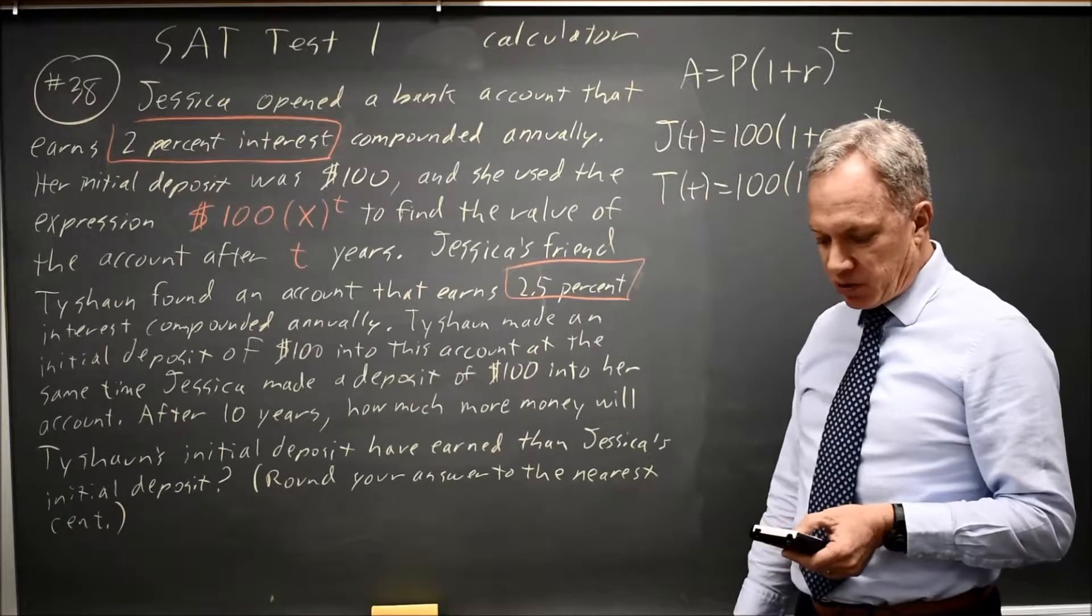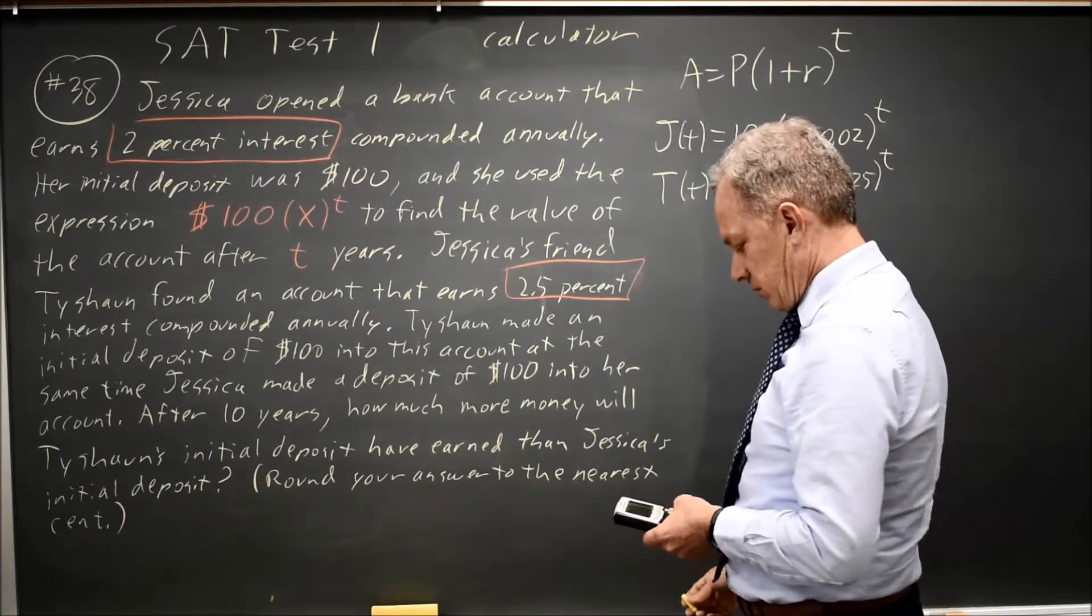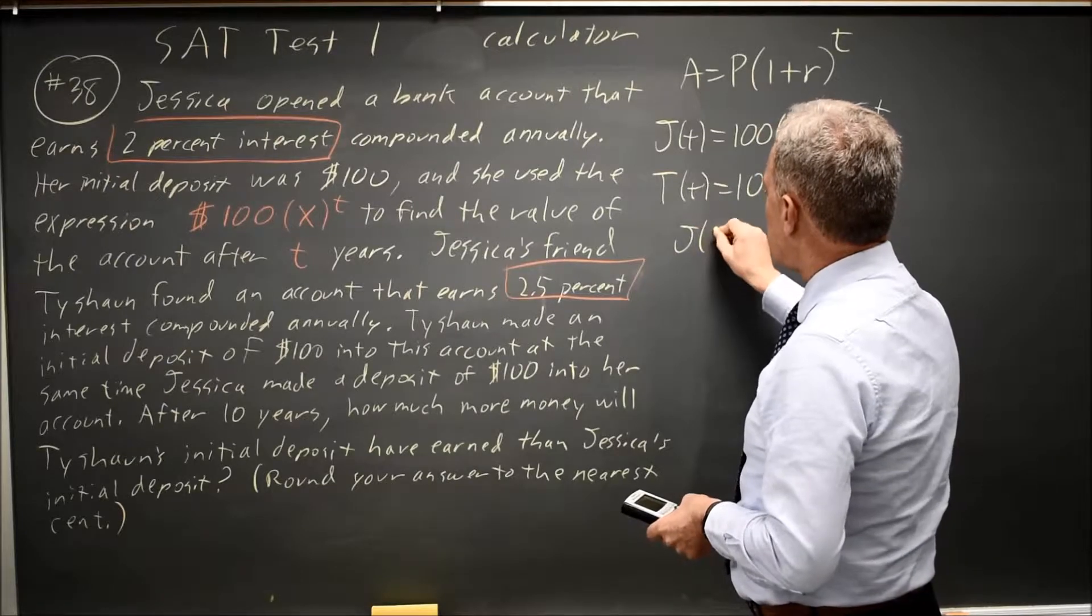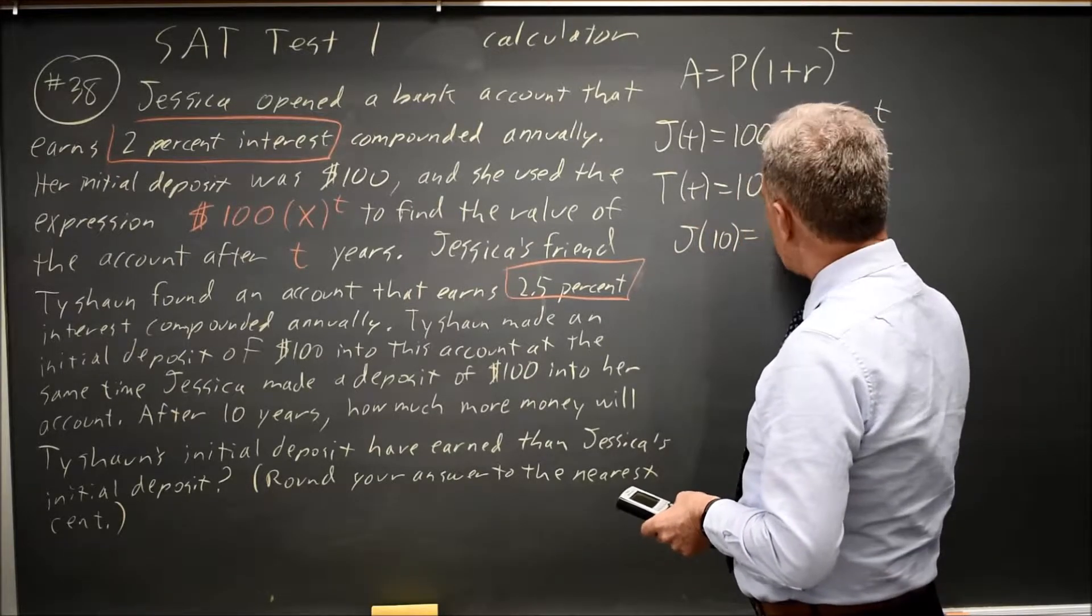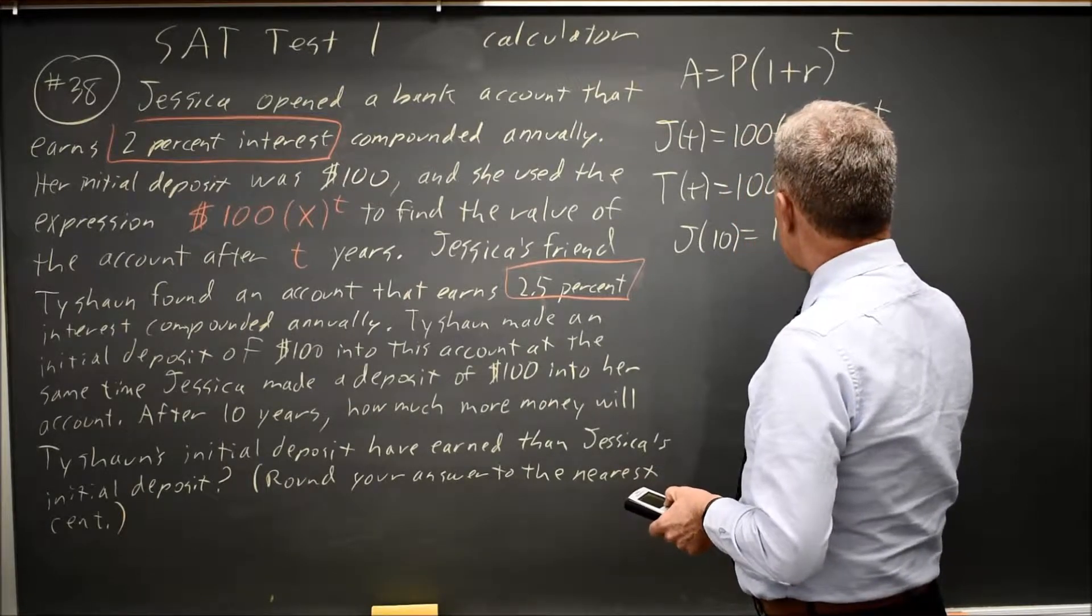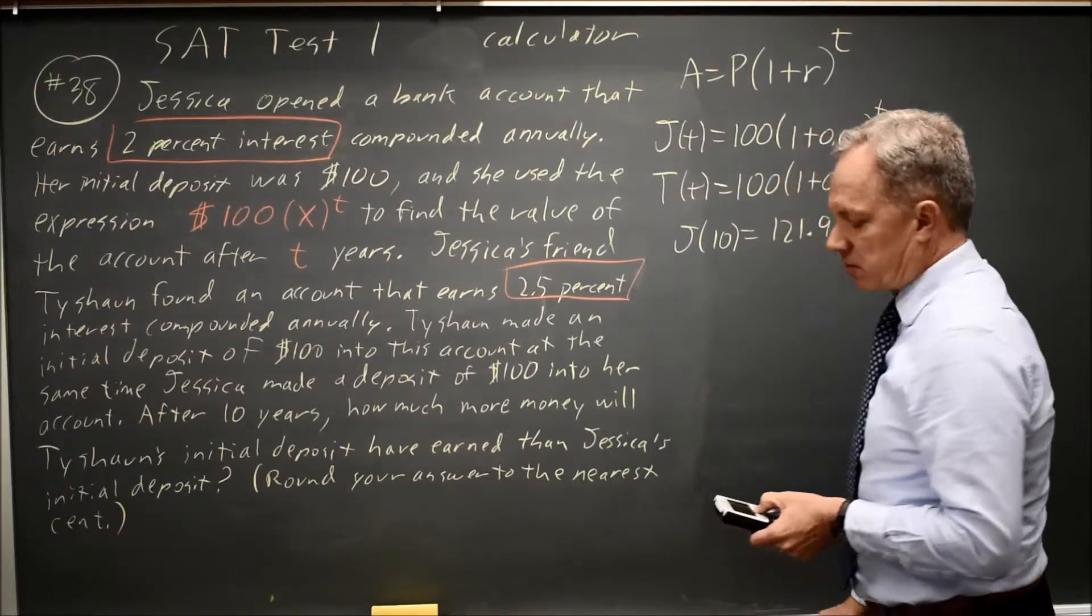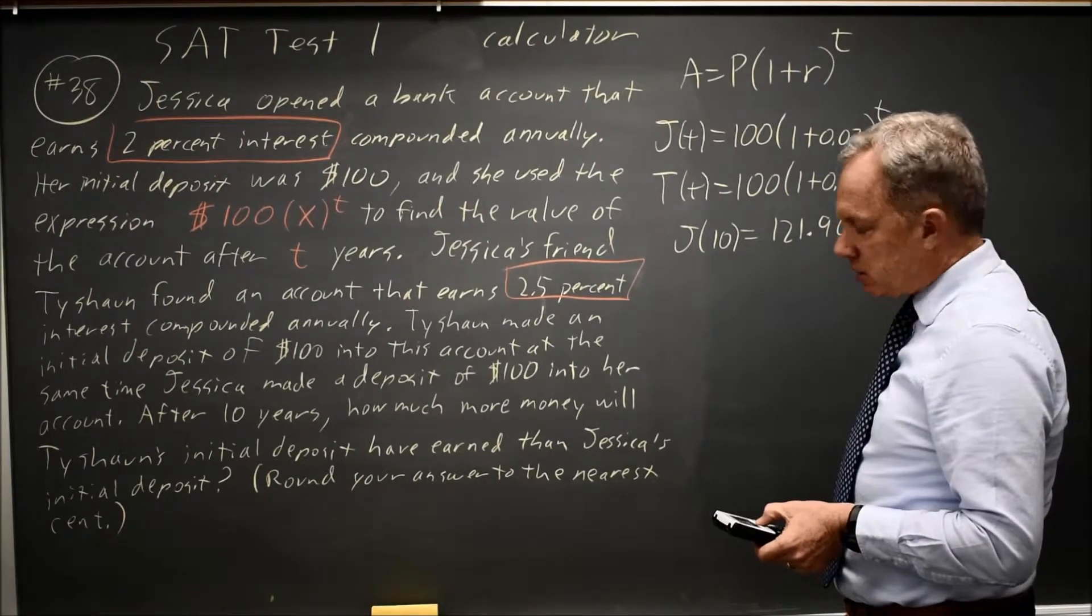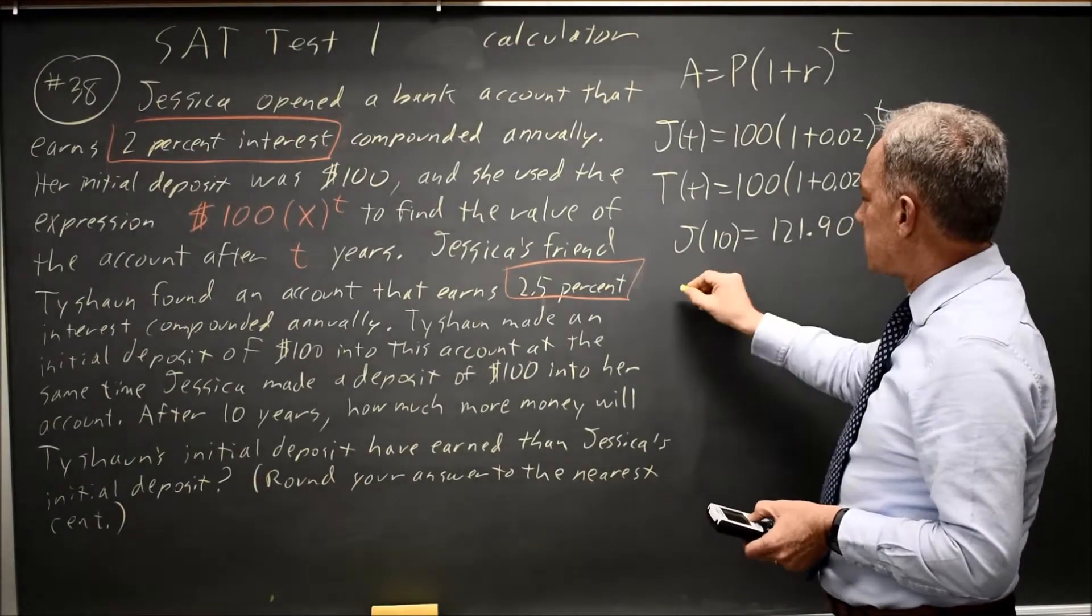So that sounds like I've entered them correctly. At 10 years, Jessica has $121.899, which I'm going to round to $121.90. I should probably keep an extra decimal place, but looking at Tyshawn, I see I'm not going to need that.